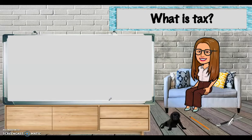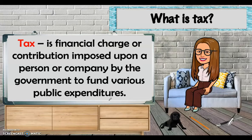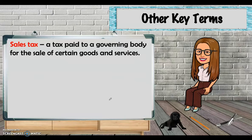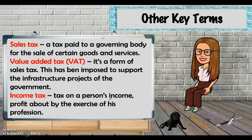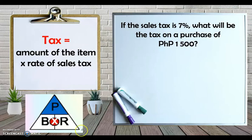Next, we will be talking about tax. Tax is a financial charge or contribution imposed upon a person or company by the government to fund various public expenditures. Key terms: sales tax is a tax paid to a governing body for the sale of certain goods and services. Value-added tax (VAT) is a form of sales tax imposed to support the government's infrastructure projects. Income tax is the tax on a person's income or profit from the exercise of their profession. Tax is also a percentage; to find the tax, multiply the amount of the item times the rate of sales tax.